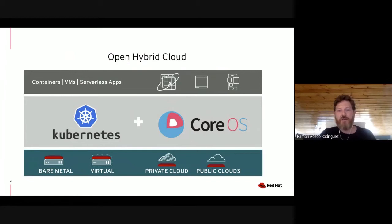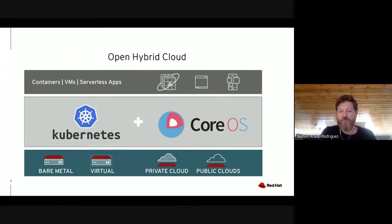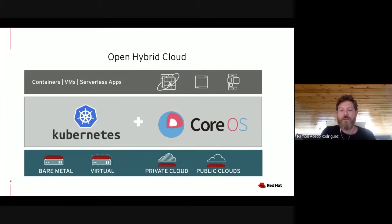The open hybrid cloud concept rests on four footprints essentially. One is bare metal, where your cluster will be directly installed on bare metal nodes. Virtual, meaning traditional virtualization, is another popular footprint. And private cloud, which is what we're going to talk about today. And public clouds — always remembering that containers are hosting applications and developers really want consistency across the four footprints.